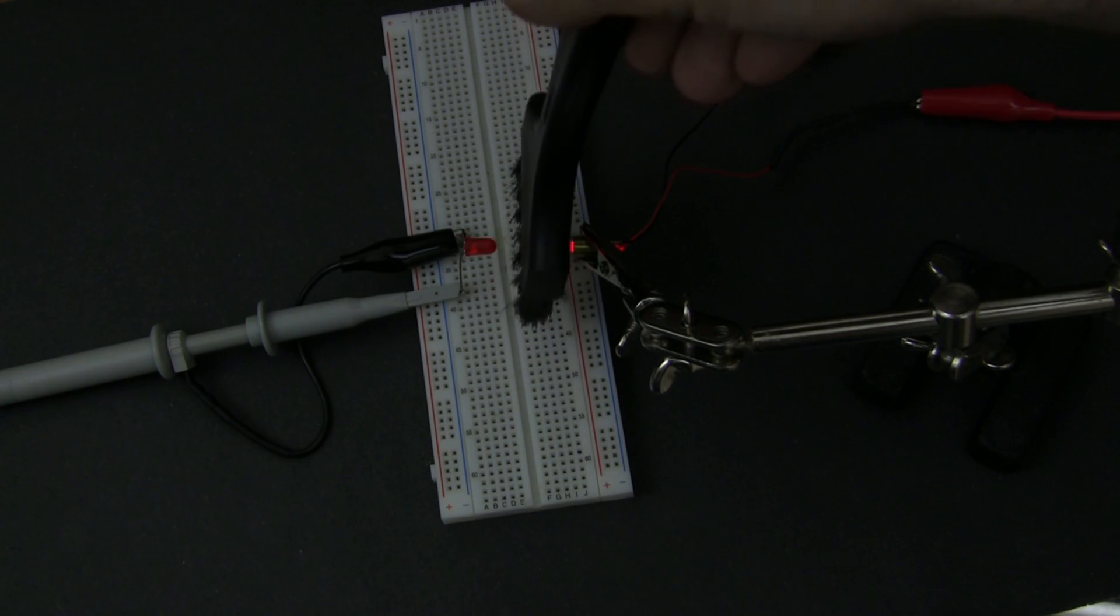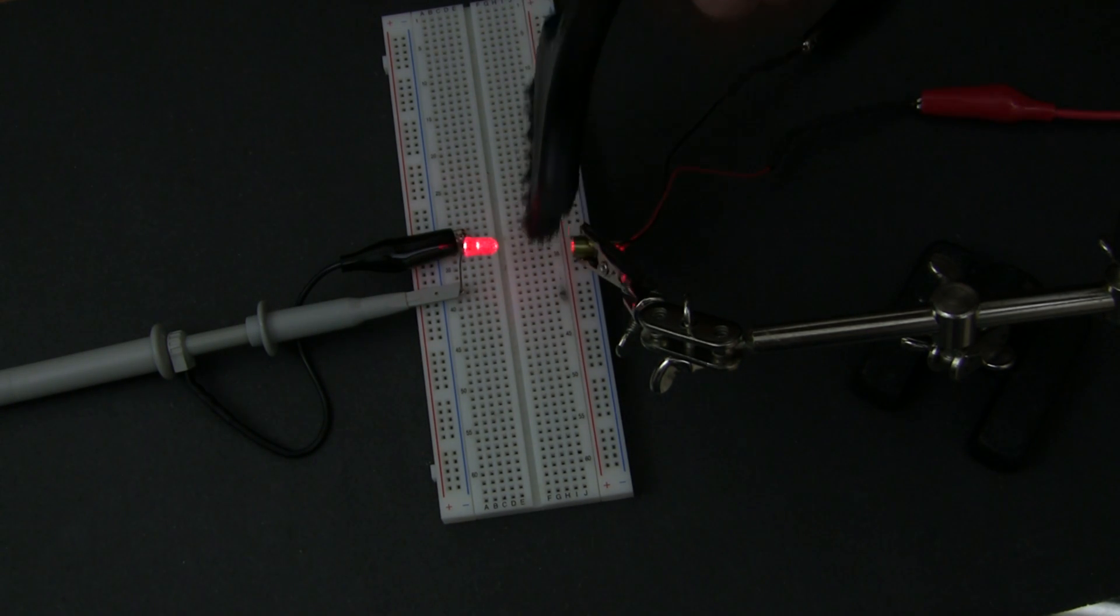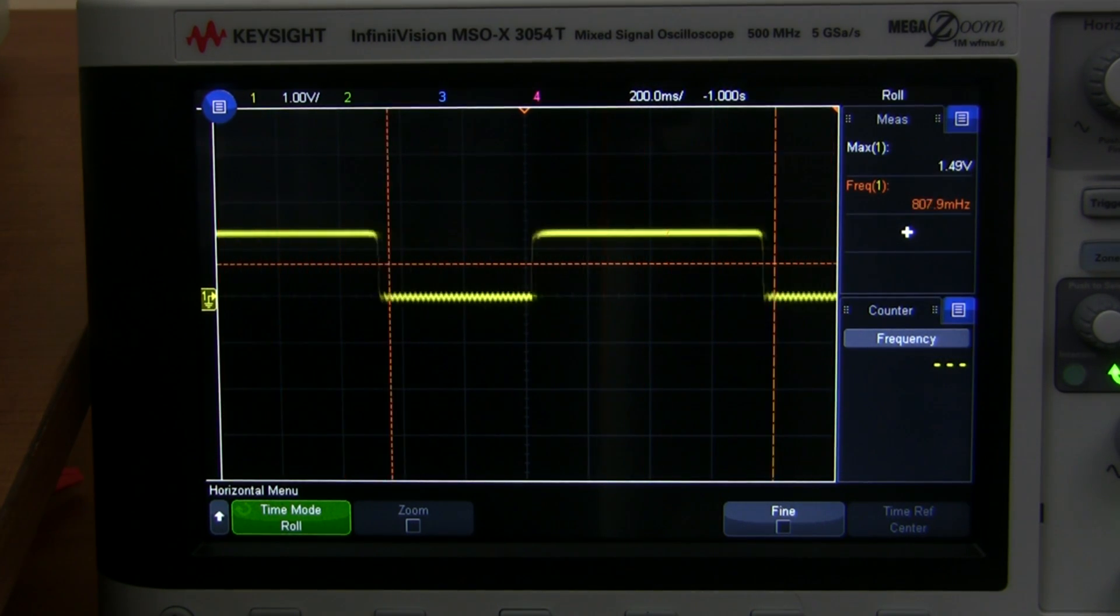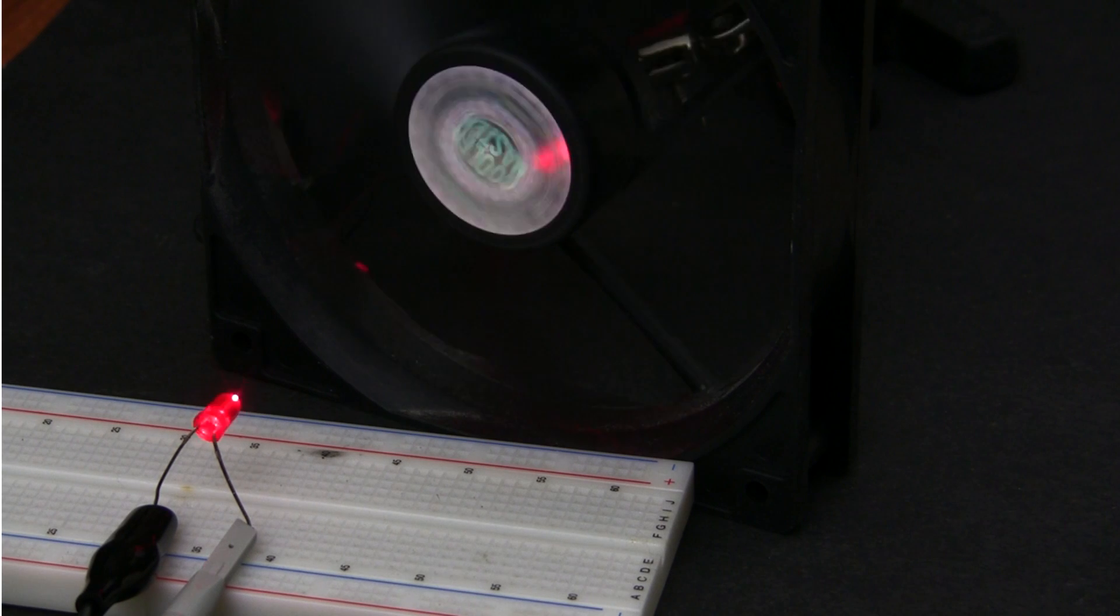Now if an object interrupts the laser beam, we can see it on the oscilloscope. The response time of the LED is way faster than a photoresistor, so you can use this trick to build a laser tachometer to measure the RPM of a rapidly rotating device.